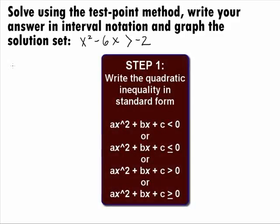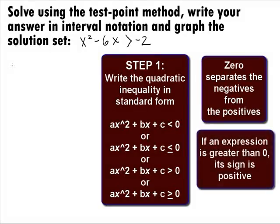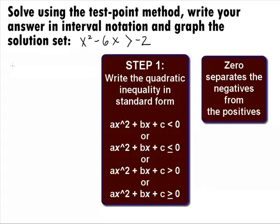In Step 1, we want to write the quadratic inequality in standard form. The standard form for a quadratic inequality is like the standard form for quadratic equations: ax squared plus bx plus c, either less than or greater than 0. The reason we are doing this is 0 is our magic number — it is the only number that separates the negatives from the positives. If an expression is greater than 0, then its sign is positive; if it's less than 0, its sign is negative. We cannot say this about any other number. Since we are working with inequalities, this idea will come in handy.